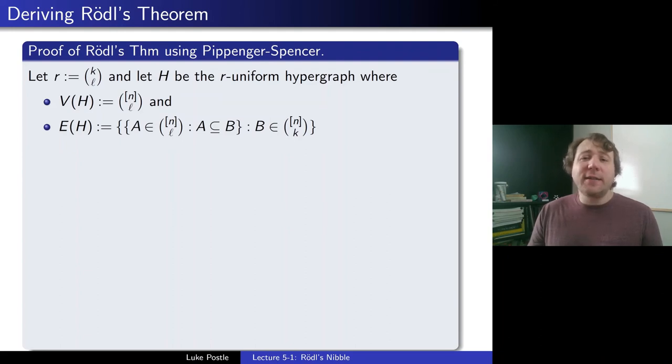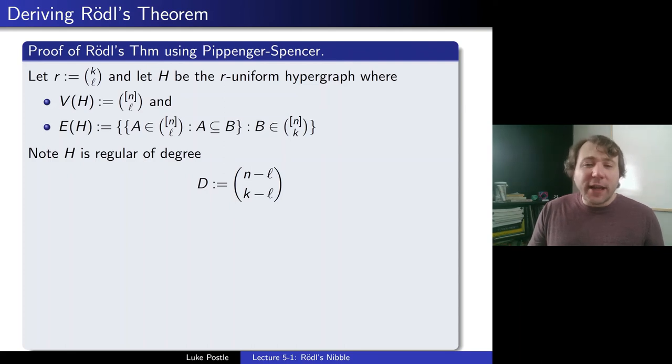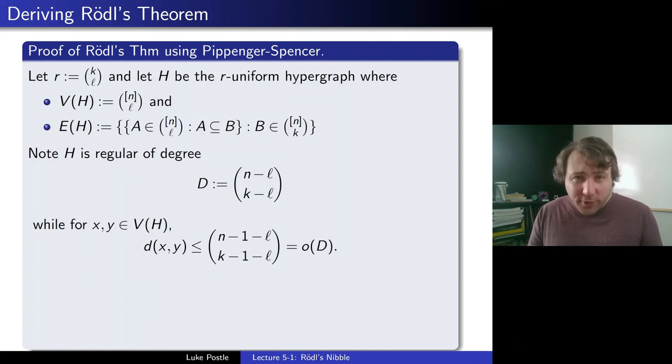So now if we could find a perfect matching in this hypergraph, that's our packing/covering that we want. But here we just want to cover in few edges. So it doesn't have to be perfect, but close asymptotically. And we'll note what are the properties of this hypergraph. The H is regular of degree d, where d, if you work it out, how many edges can an ℓ-element set be in? Well, of the n-ℓ remaining vertices, you need to choose k-ℓ of them to extend to a k-element set. So that's clearly the degree. It's the same for every vertex. So it's regular.